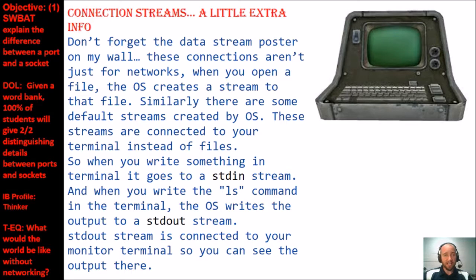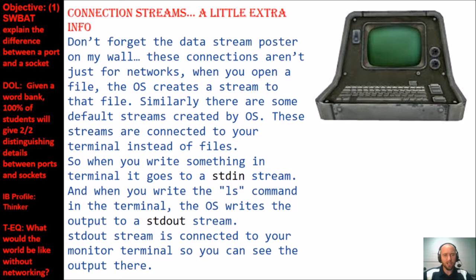In my classroom there's a giant data stream poster showing the amount of ones and zeros a computer can receive for something as simple as text. These connections aren't just for networks — ones and zeros also go from one part of your computer to another. When you open a file, the operating system creates a stream to that file. Similarly, default streams are created by the OS connected to your terminal. When you type something in the terminal, it goes to a standard in-stream; when you type the ls command, the OS writes output to a standard out-stream so you can see it.